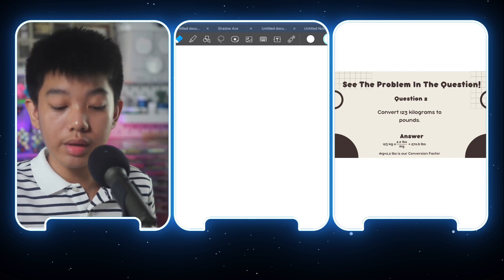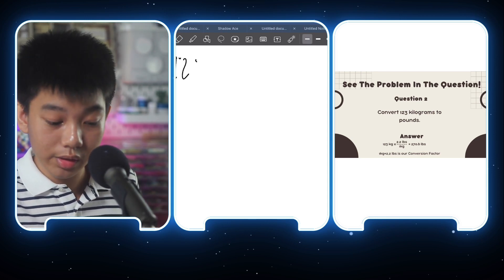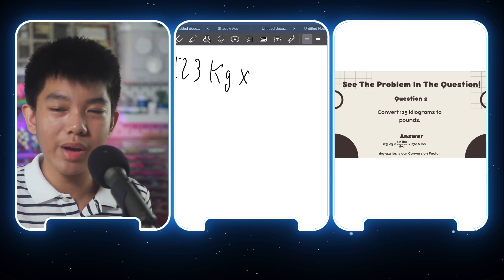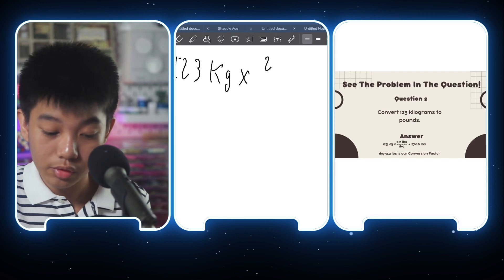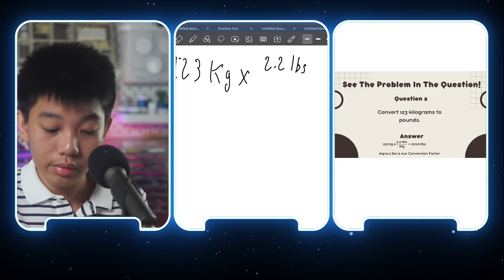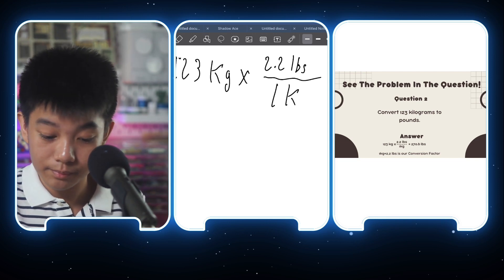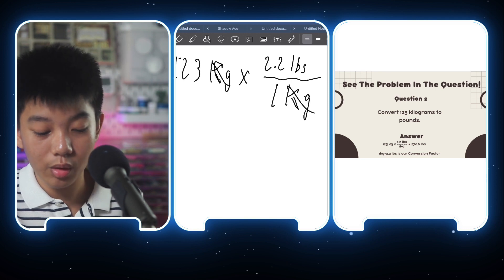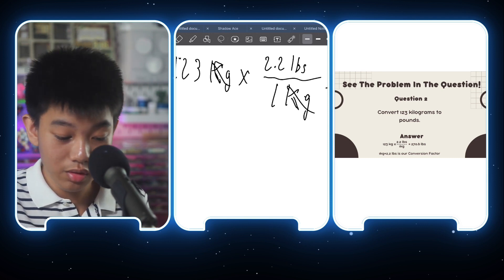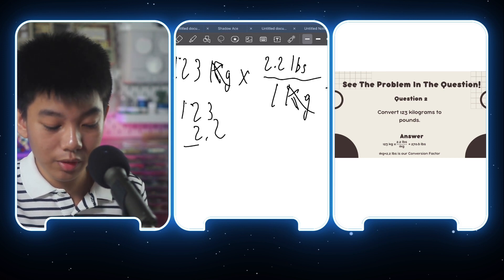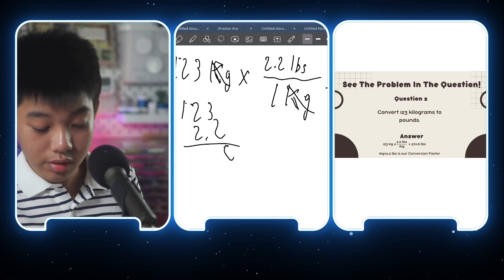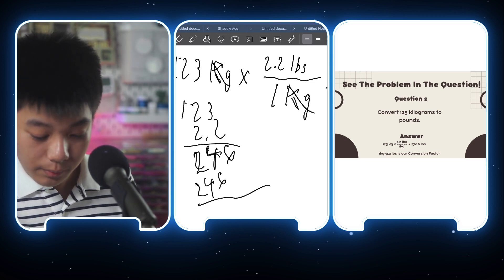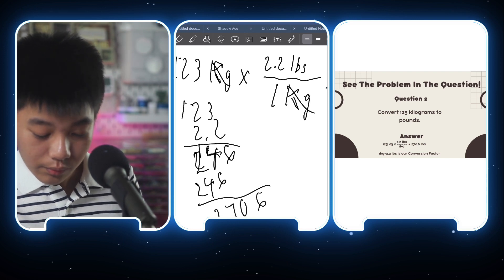This one has you converting 123 kilograms into pounds. The conversion factor or fraction you need here is 2.2 pounds over one kilogram. Since the kilogram is both here in the denominator and here in our question problem number, we cancel out both, multiply this to 2.2. And when you do that, you should get, so multiply 123 by 2.2, and it should give you, if you do the multiplication correctly, 270.6.